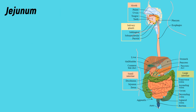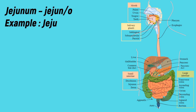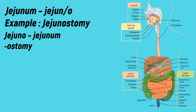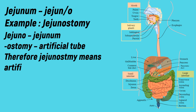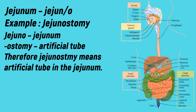Jejunum: the medical term for jejunum is 'jejuno'. Example: jejunostomy. -Ostomy means artificial tube. Therefore, jejunostomy means an artificial tube in the jejunum.